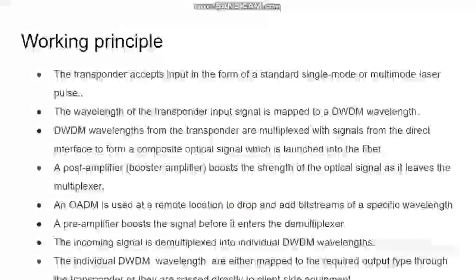Working principles of DWDM systems. First, transporters accept input in the form of a standard single-mode or multiplexed laser pulse. The wavelength of the transport input signals is mapped to a DWDM wavelength. Then the DWDM wavelengths from the transporter are multiplexed with signals from the direct interface to form a composite optical signal, which is launched into the fiber. A booster amplifier boosts the optical signal as it leaves the multiplexer. An OADM is used at a remote location to drop and add streams of a specific wavelength. A pre-amplifier boosts the signal before it enters the demultiplexer. The incoming signal is then demultiplexed into individual DWDM wavelengths.